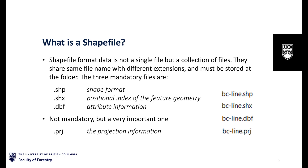SHP saves the shape information. SHX is the positional index of the shape, and DBF is the attribute table. The PRJ file is not mandatory, but it is very important for GIS software to locate its shapes to the right place.